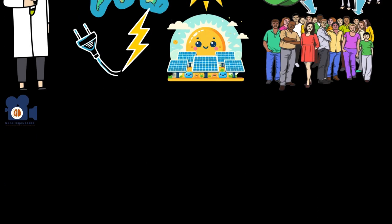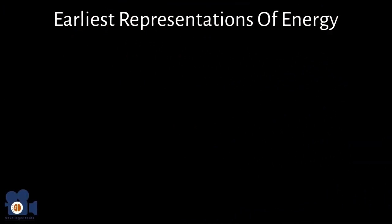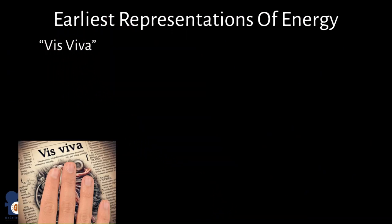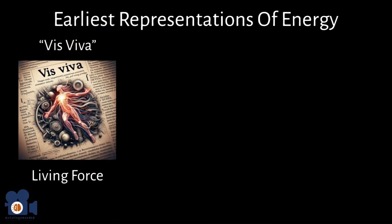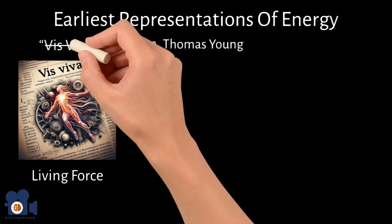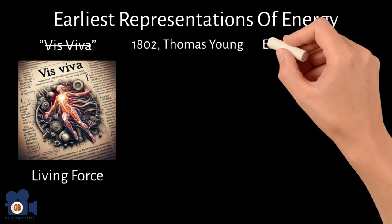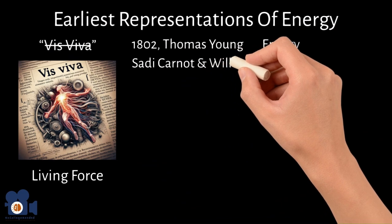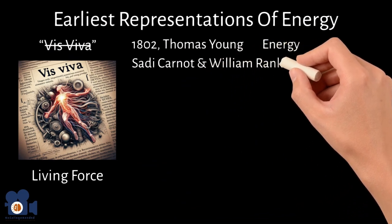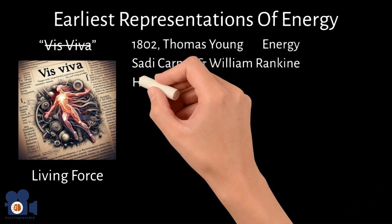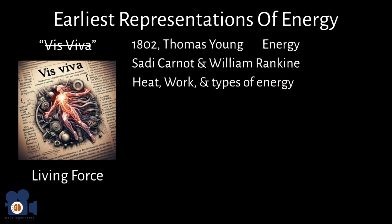Some of the earliest representations of energy were embodied by the Latin term vis viva, meaning living force. However, in 1802, Thomas Young was the first person to replace the term vis viva with energy, and Sadi Carnot and William Rankine further refined this into the modern concepts of heat, work, and different types of energy.